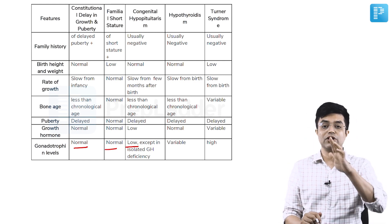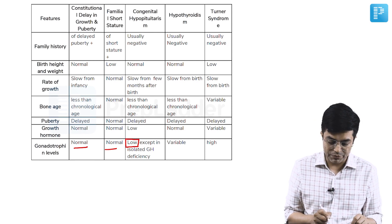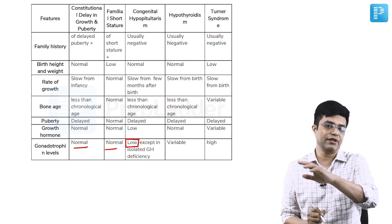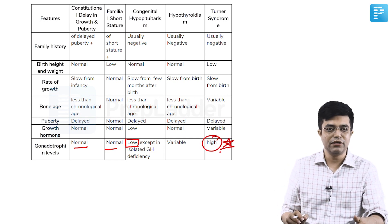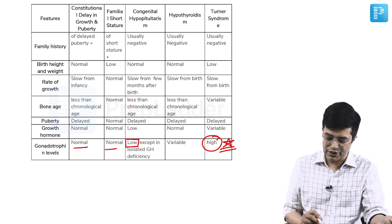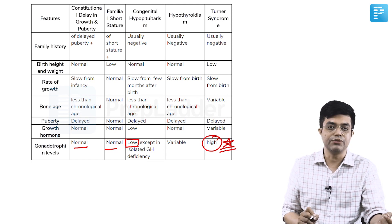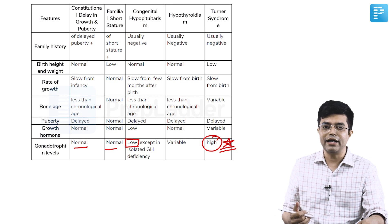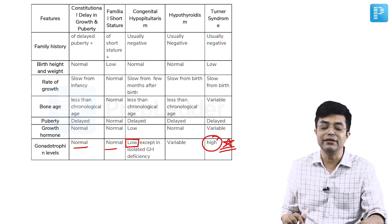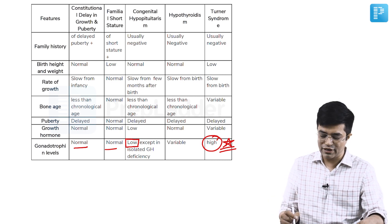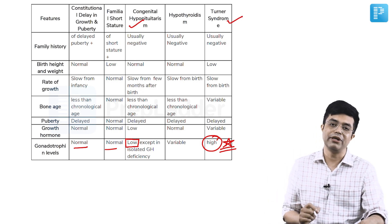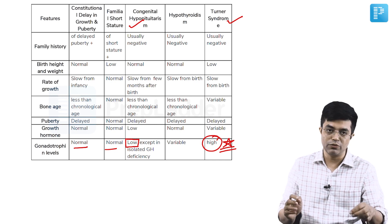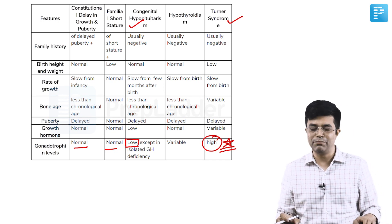Lastly, serum gonadotropin levels. In constitutional delay in growth it will be normal; familial short-stature will be normal. It will be low in congenital hypopituitarism, except in isolated growth hormone deficiency where gonadotropins are not affected. It will be variable or mostly normal in hypothyroidism. Turner syndrome will have high gonadotropin levels — a useful distinguishing point. In Turner syndrome you have streak gonads and primary gonadal failure, so the feedback inhibition to the pituitary and hypothalamus is absent, leading to high serum gonadotropin levels. This can be used to distinguish Turner syndrome from other varieties. Keep learning, thank you very much.